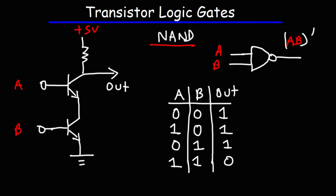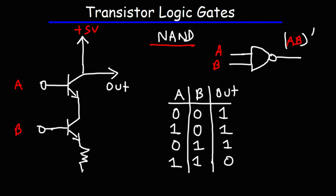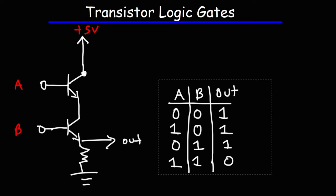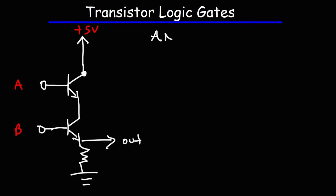Now let's change the circuit. Instead of having the resistor at the positive voltage, let's put the resistor between the emitter of the second transistor and ground. We're going to put the output there. This is going to change from the NAND circuit to the AND circuit.